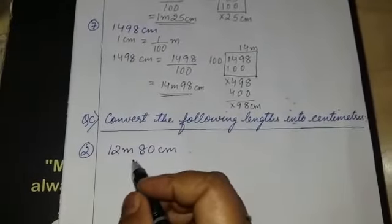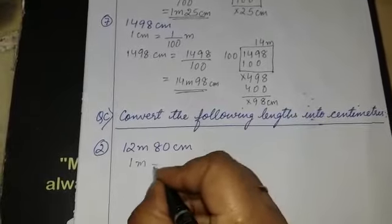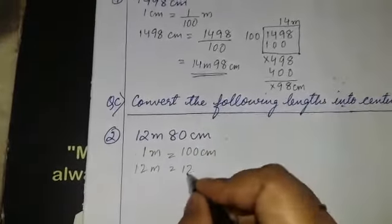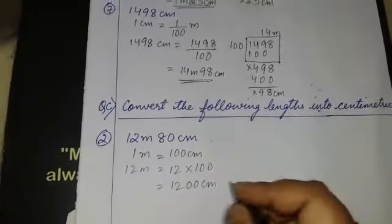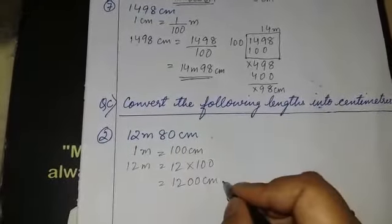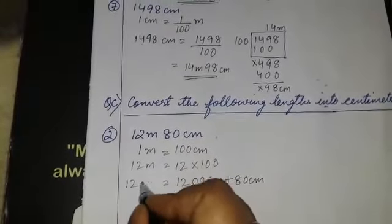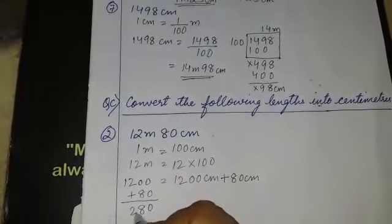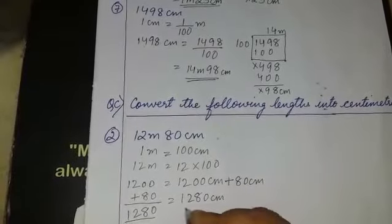Next question: convert the following length into centimeter. Here both meters and centimeters are given — 12 meter 80 centimeter — and we convert into centimeter. Using the formula, 1 meter is equal to 100 cm, so 12 meter equals 12 × 100 = 1200 centimeter. The 80 centimeter is already in centimeter, so we just add: 1200 + 80 = 1280 centimeter. That is the answer.